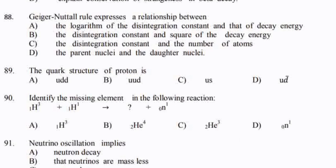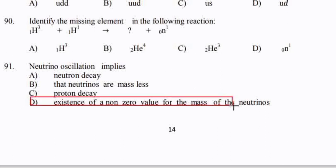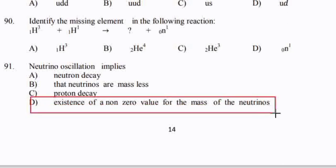Neutrino oscillation implies — option D — the existence of a non-zero value of the mass of the neutrinos.